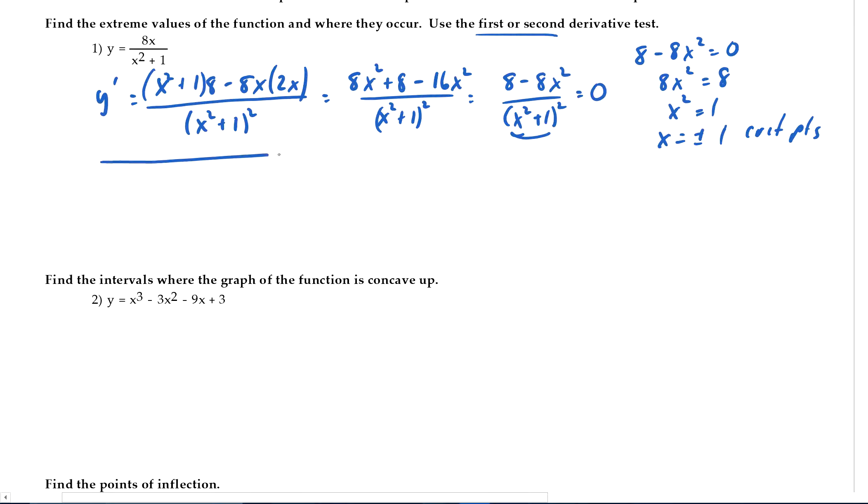So on the AP test, this little chart here is non-existent. So this is solely for you to figure this out. So I've got numbers less than negative 1. What is y prime? Not y, but y prime. Well, the denominator is always positive, so we worry about the numerator.